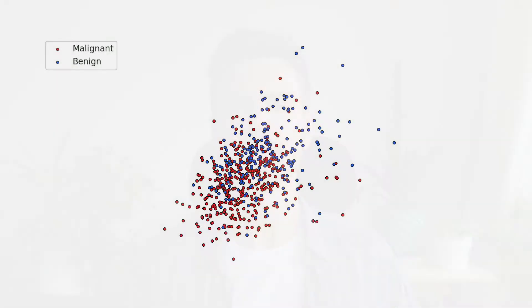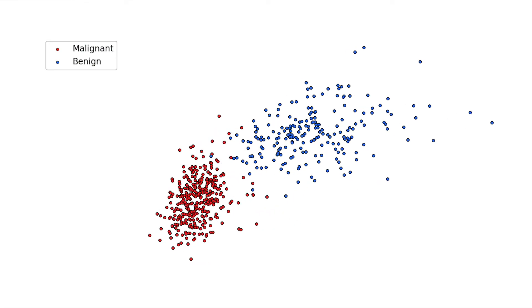You've probably heard of Principal Component Analysis, or PCA for short. You can use it to reduce the dimensionality of your feature space or to produce uncorrelated features. You may not know that you can also use PCA to explore the classification power of your data. I'll explain how we can use PCA to explore our data in this way.